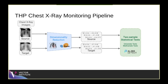Once you reduce the dimensionality, you do two-sample statistical tests using the source and target domains as defined. We roll through a set of univariate and multivariate tests to find the right pairing between dimensionality reduction techniques and statistical test methods.